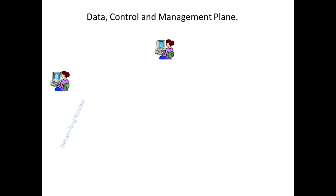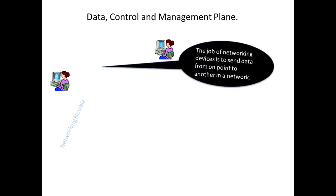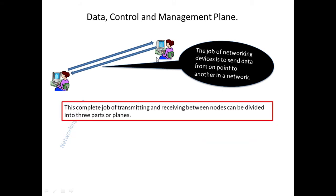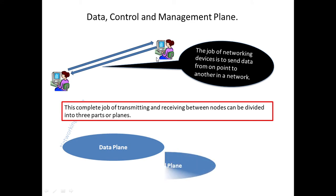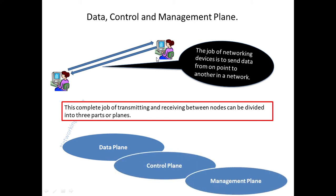The basic job of a computer network is to send data from one point to another. These two computers exchange data — which can be email, video, or audio. The complete job of sending information to another node and receiving something back has been divided into three planes: the data plane, control plane, and management plane.